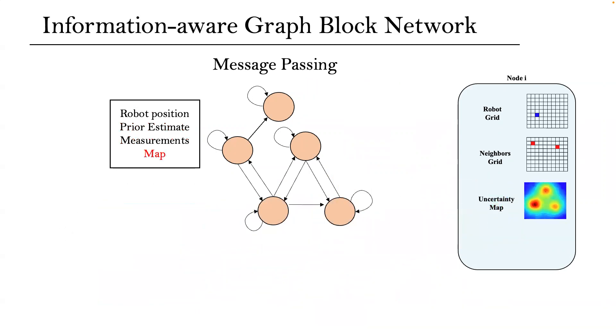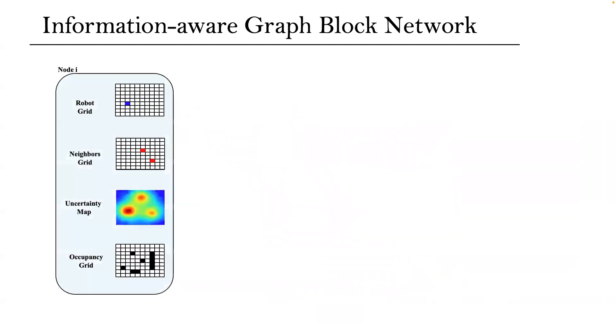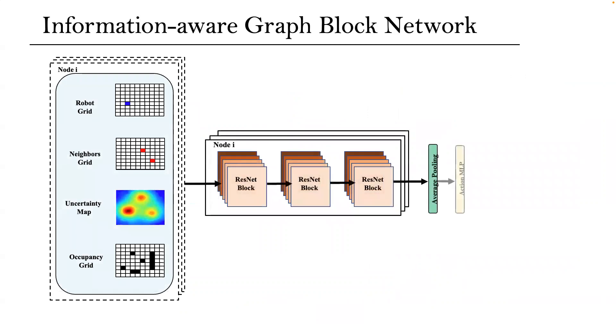Finally, each node holds an occupancy grid of the environment. The aggregate information is locally processed by a sequence of ResNet blocks to compute the control action for the indexed robot.